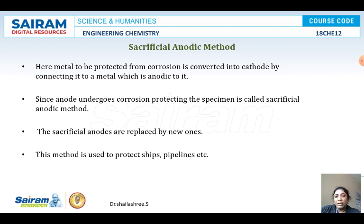The anode metal zinc is getting corroded, sacrificing its life to protect the base metal iron, so this method is referred to as the sacrificial anode method. When zinc and iron are connected, being anodic, zinc undergoes oxidation with liberation of electrons at the anode, gets corroded, and protects the base metal iron.